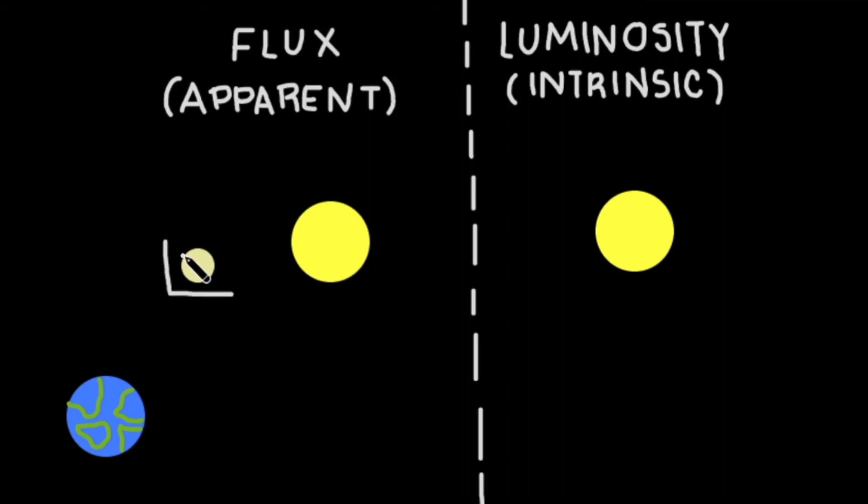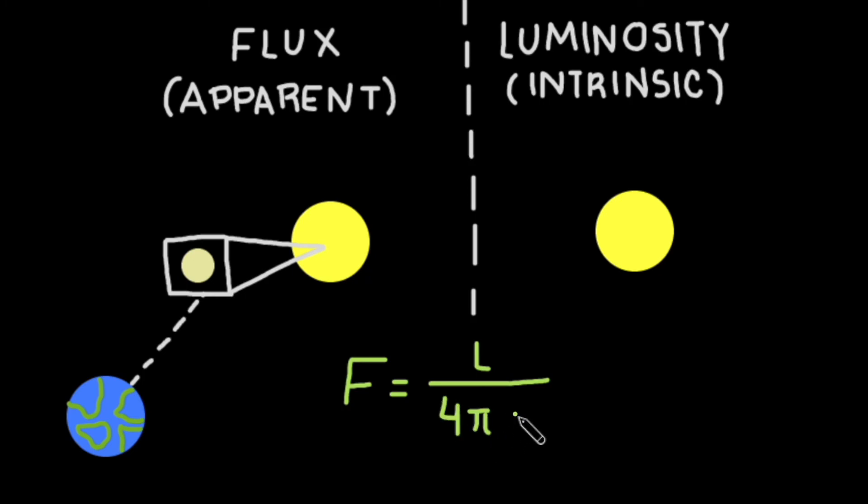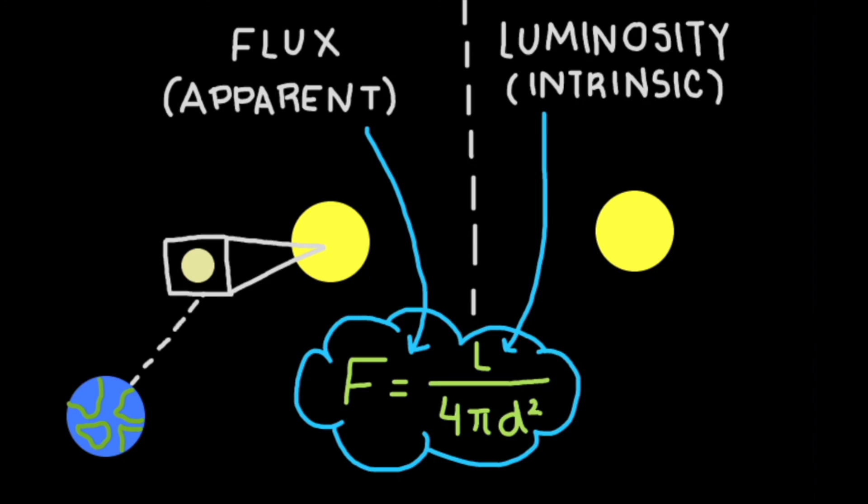We can measure a star's flux from Earth, and we can use the period of cepheid variable stars to get a luminosity. Once we have both the flux and the luminosity of an object, we can plug these variables into the flux luminosity equation to get a distance.